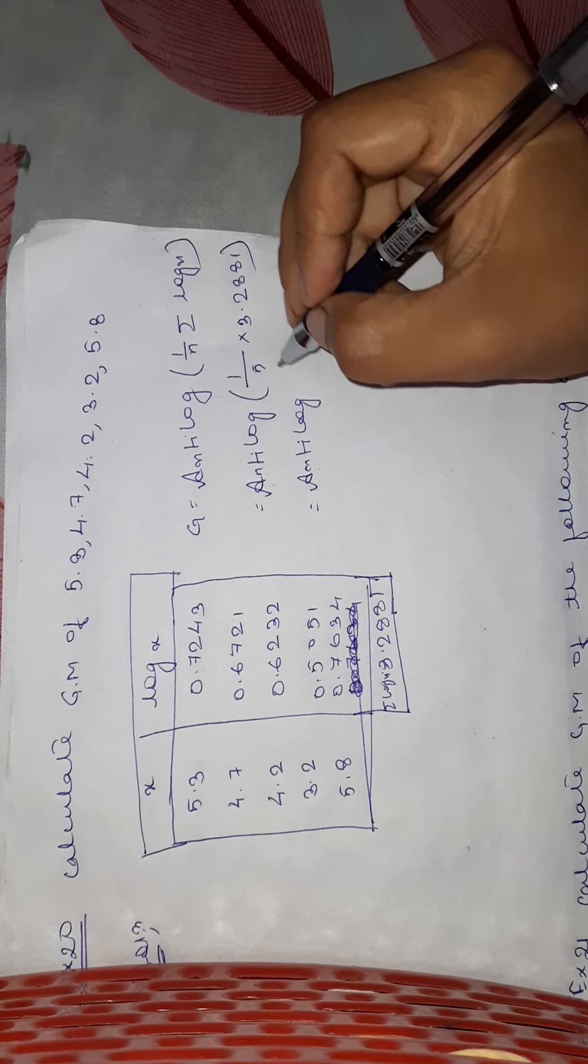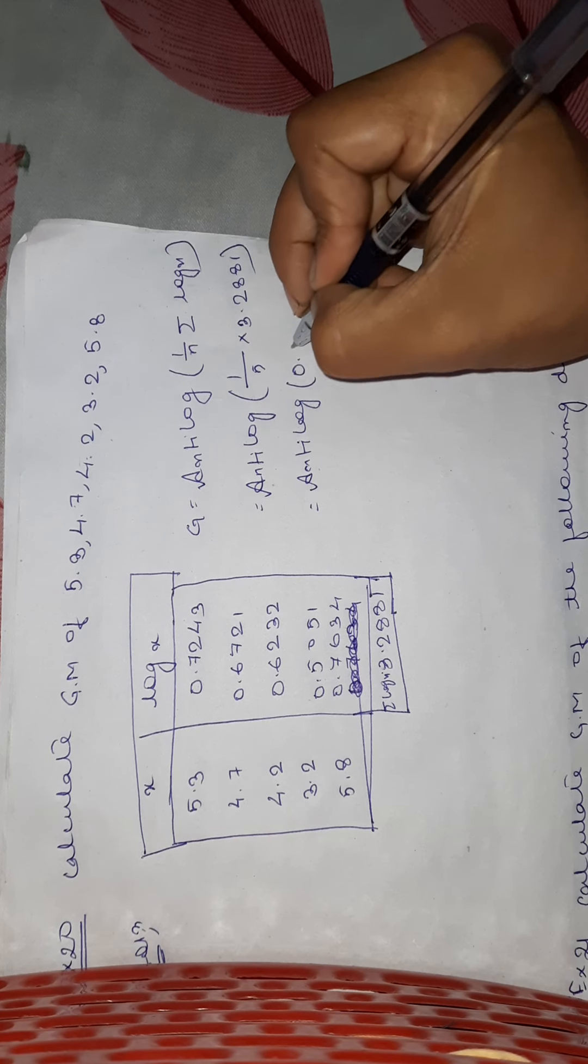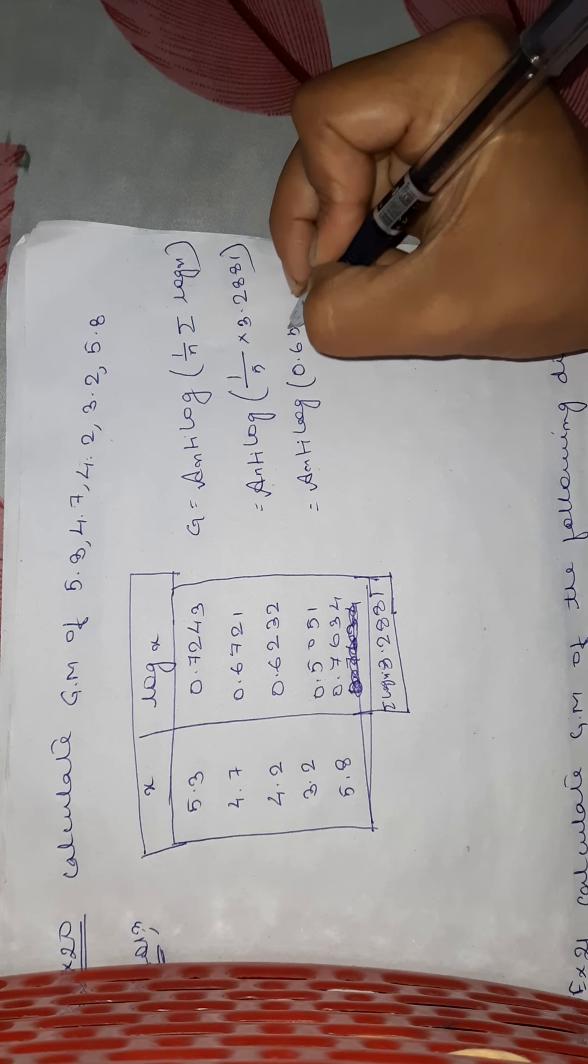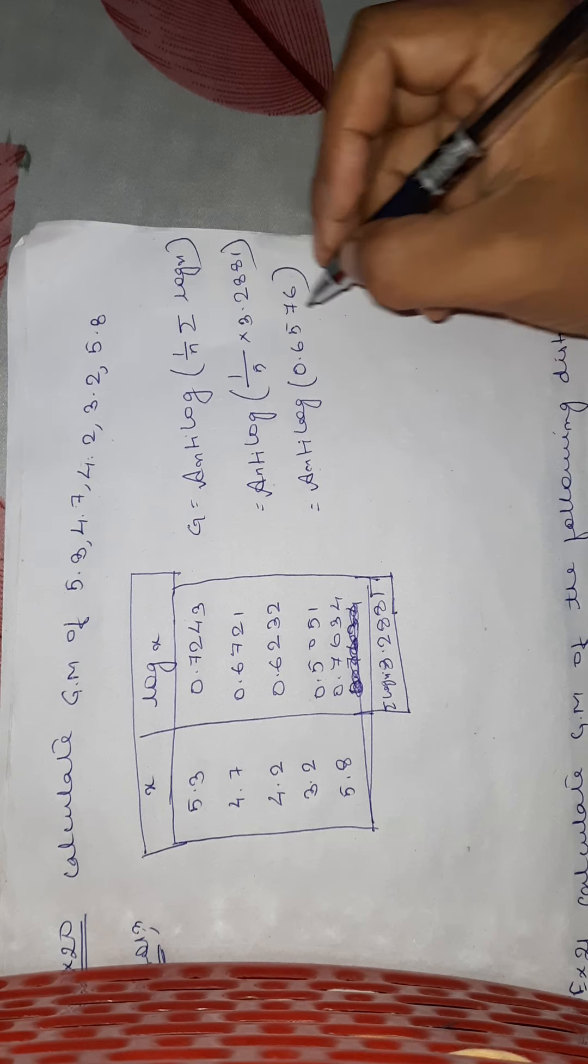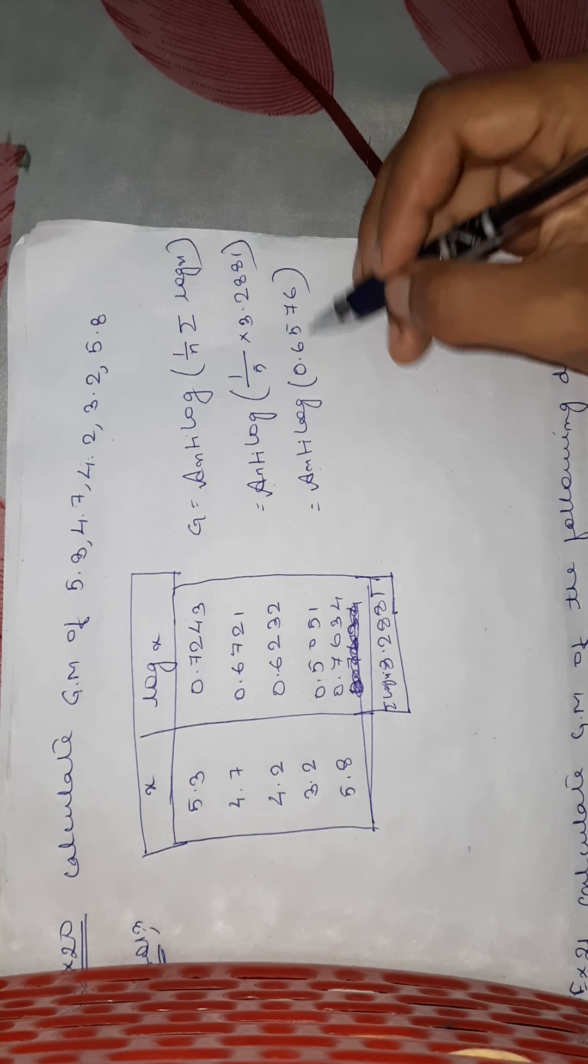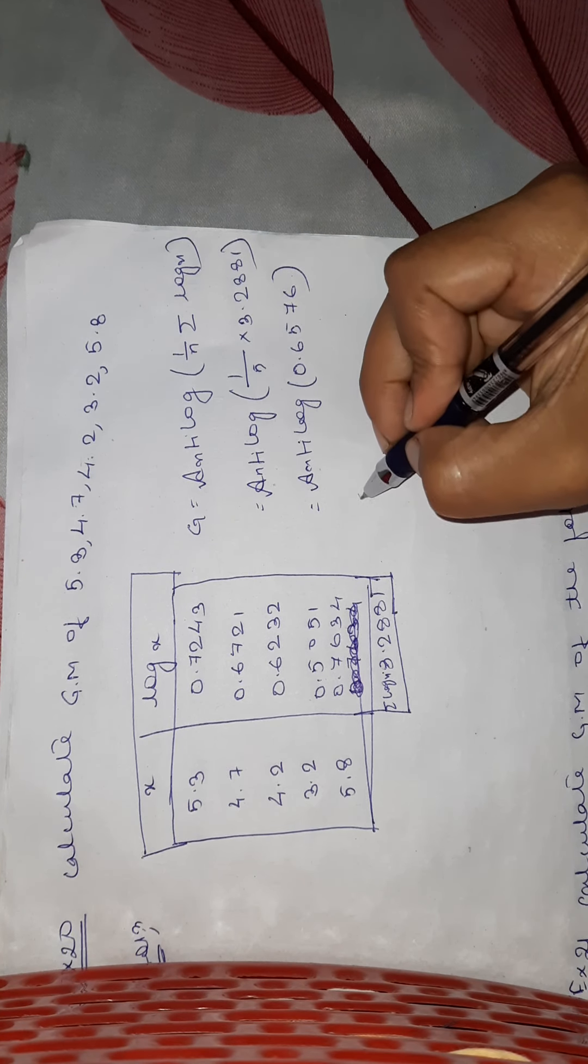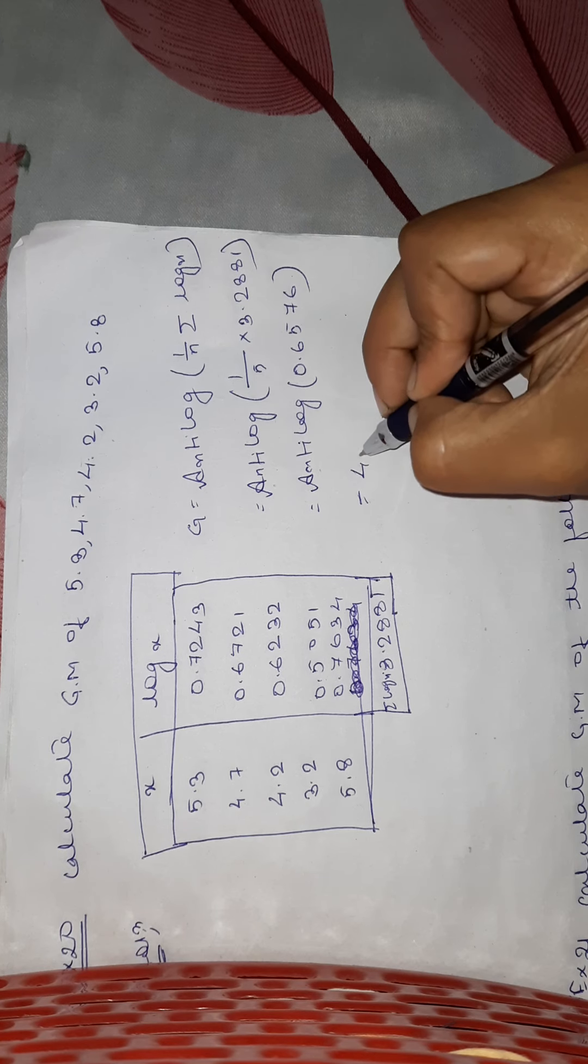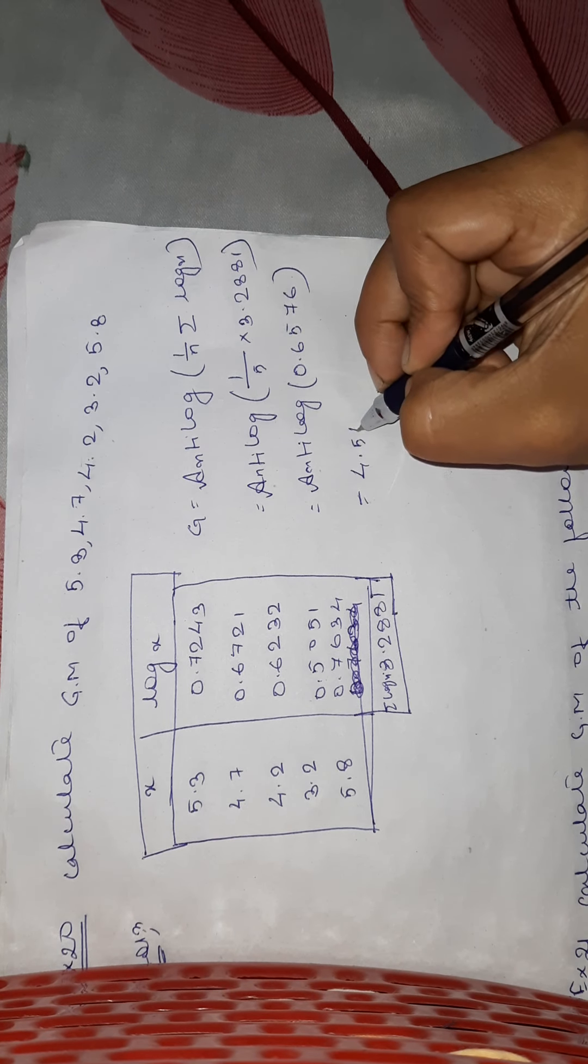So after dividing this value by 5, we will get 0.6576. And now you have to find the antilog of this value. It will be 4.545.